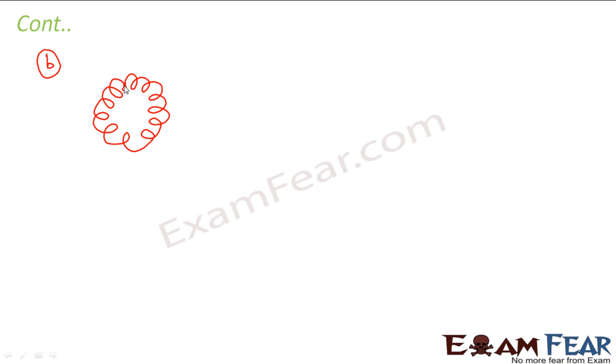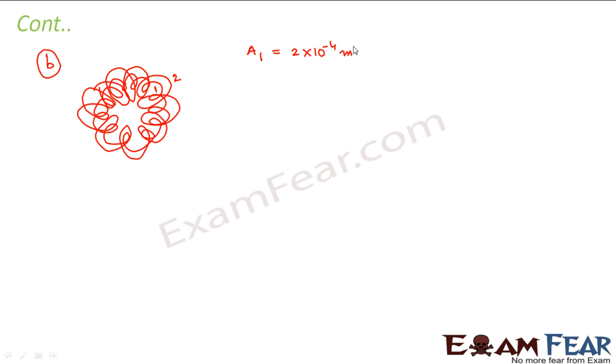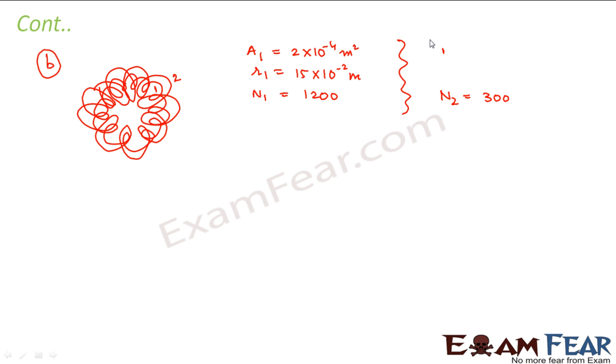The earlier initial toroid is already there, and on top of this toroid there is another toroid. Let me name the outer toroid as toroid 2 and the inner one as toroid 1. For the inner toroid: area A₁ = 2 × 10⁻⁴ m², radius r₁ = 15 × 10⁻² m, and N₁ = 1200 turns. For the outer toroid, N₂ = 300 turns. The change in current is given in the primary coil.